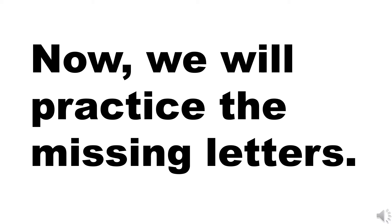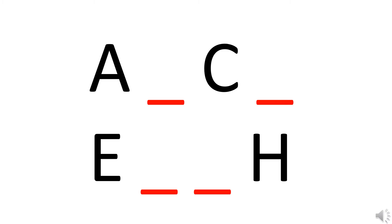Now, to understand what missing letters are, we will do some exercise and practice. Okay children, here we see letter A and then after A there is a blank. What comes after A? Yes, B. So we will write B.